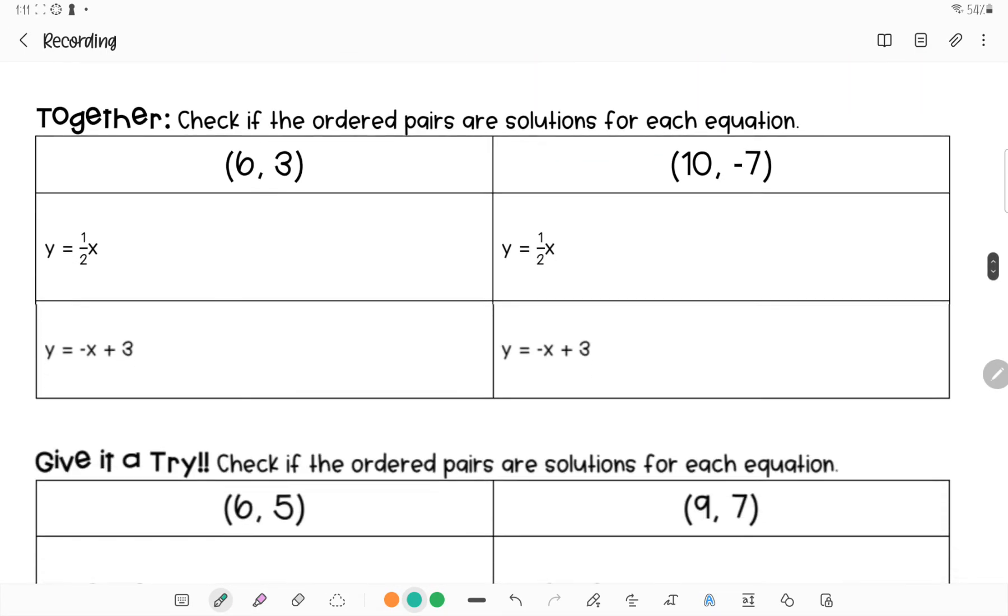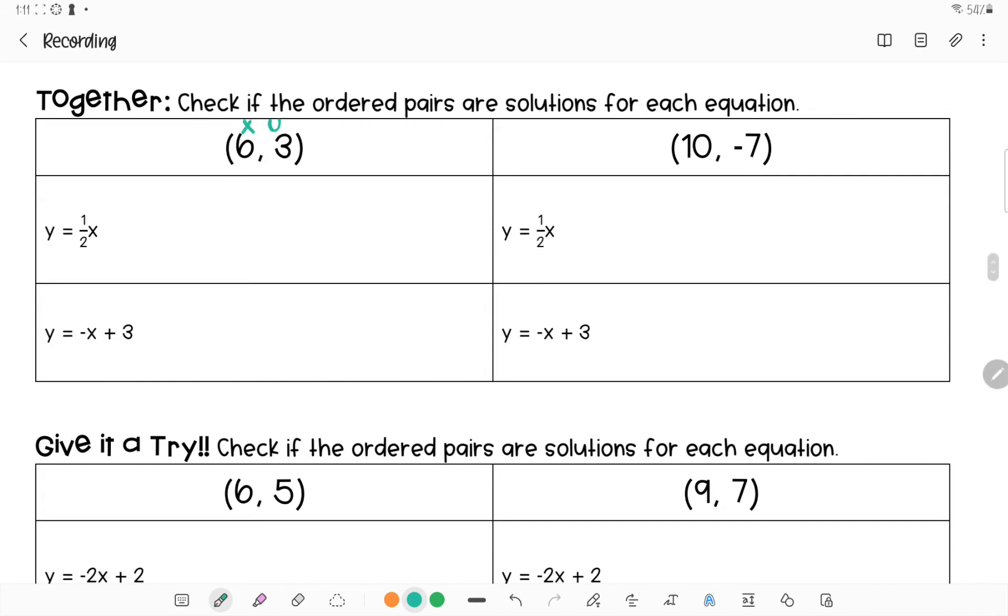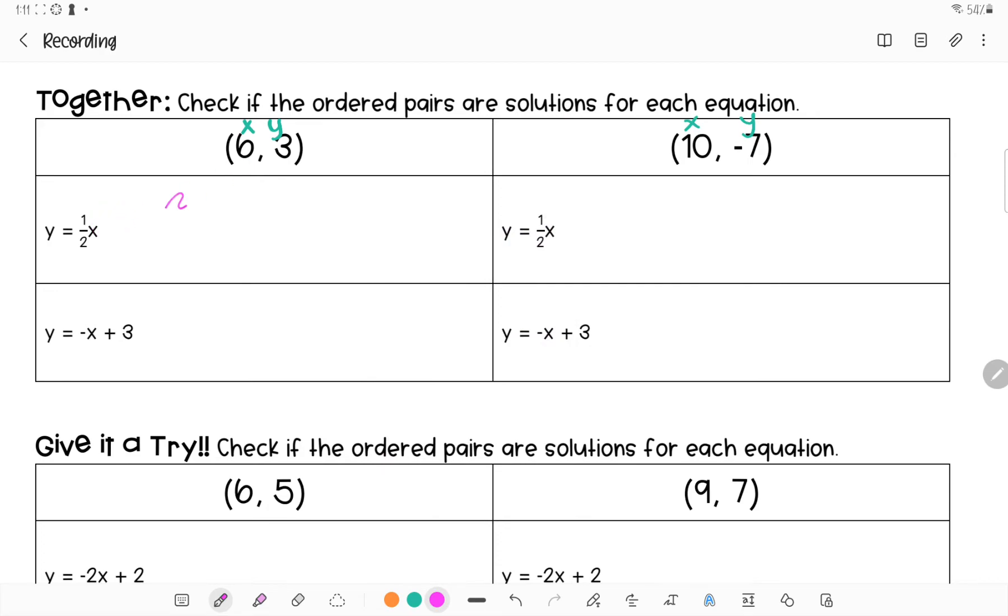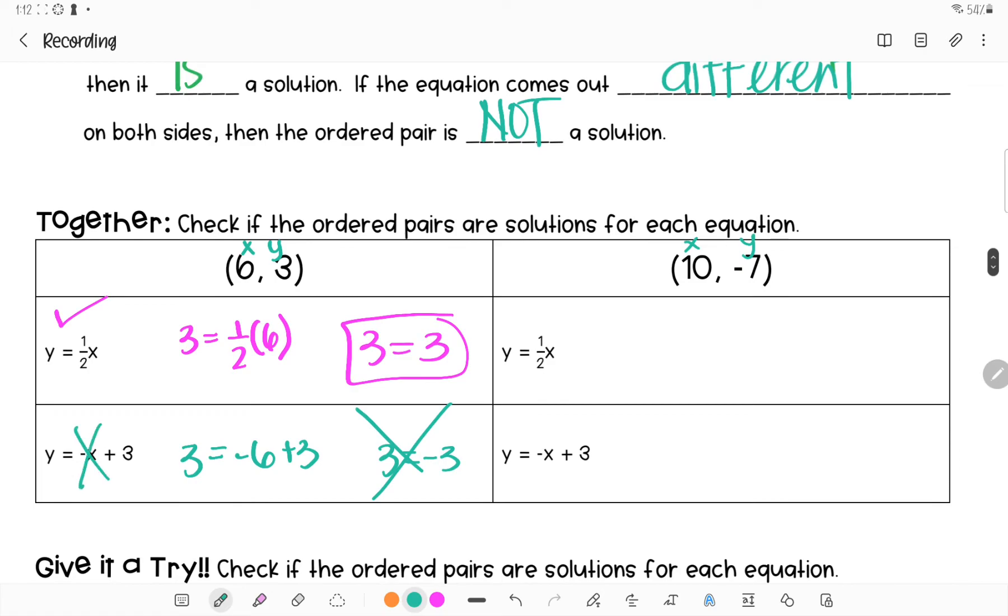All you're doing is plugging it in seeing if it comes out. On this one, this is my x, this is my y, this is my x, this is my y, and I am going to replace. I'm going to do y equals 3 and x equals 6. In other words this says 3 equals 1/2 of 6. So yes, it is an ordered pair for this one. If we were to graph this line it would definitely go through that. Then I would replace 3 equals negative x which is negative 6 plus 3, and this says that 3 is equal to negative 3. This is not true. So this one's a no, that one's a yes.